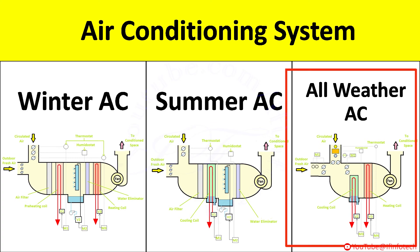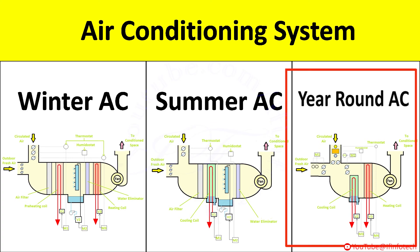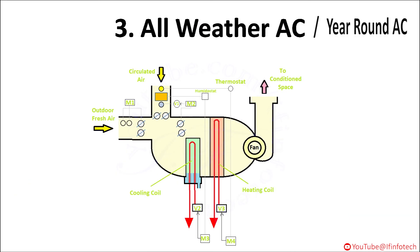The third type is all weather AC, also called year-round AC. We cannot use summer AC in winter season and winter AC in summer season. Therefore, to provide comfort conditions throughout the year, year-round AC is used, which is capable of maintaining specified temperature and humidity with respect to outdoor conditions throughout the year. Such a system is more useful as it reduces capital cost.